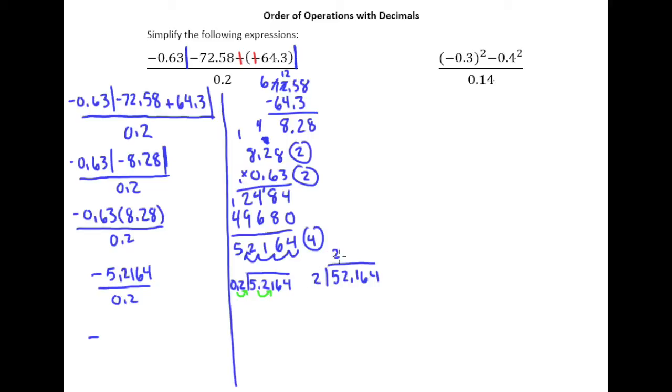So 2 goes into 5 twice. Remainder of 1. Drop the 2. 2 goes into 12 six times. 6 times 2 is 12. Remainder of 0. Drop down the 1. 2 does not go into 1. So here I'll have 0.0. Drop down the next one, which is 6. 2 goes into 16 eight times. Drop down the 4. Lastly, 2 goes into 4 exactly twice. So our answer here ends up being negative 26.082.